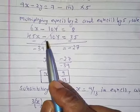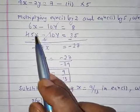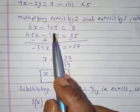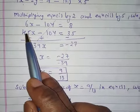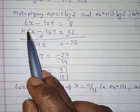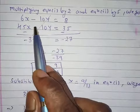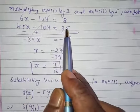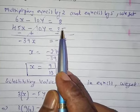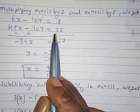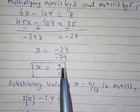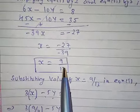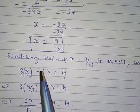Since both terms have the same sign (minus), we need to change the sign of one equation before subtracting. After simplifying, we get x is equal to 9 by 13.